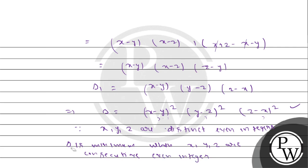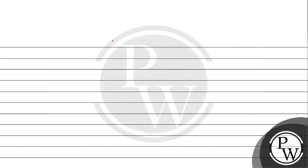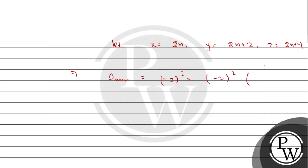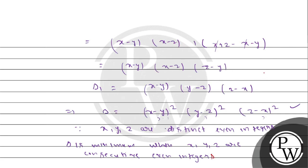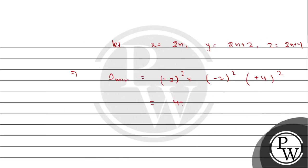If we have consecutive even integers, the minimum will occur. Let x equals 2n, y equals 2n plus 2, and z equals 2n plus 4. Then x minus y equals negative 2, y minus z equals negative 2, and z minus x equals 4. Squaring each: 4 times 4 times 16 equals 256. So the minimum value is 2 to the power 16, which equals 256. Hope you enjoyed it — thank you.